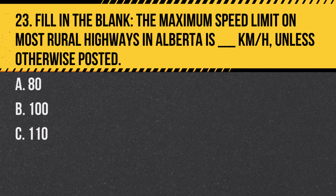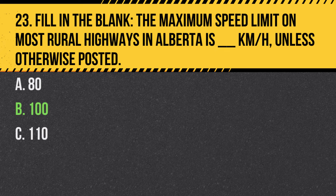Question 23. Fill in the blank. The maximum speed limit on most rural highways in Alberta is ___ km/h, unless otherwise posted. a. 80. b. 100. c. 110. Answer: b. 100. The default speed limit on most rural highways in Alberta is 100 km/h, unless signs indicate otherwise.